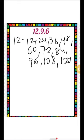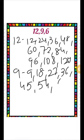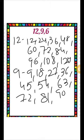Now write the multiples of 9: 9, 18, 27, 36, 45, 54, 63, 72, 81, 90.